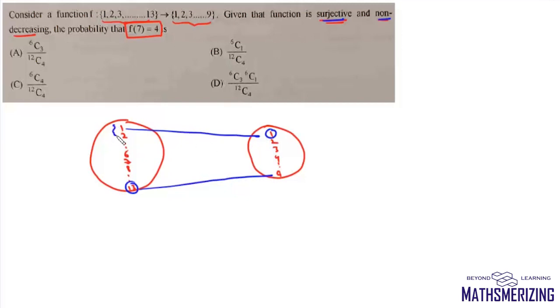What we will do is say these first x1 elements will be mapped to 1, then x2 will be mapped to 2, and then we will have x9 which are mapped to 9. So x1 plus x2 plus x9 must equal 13.